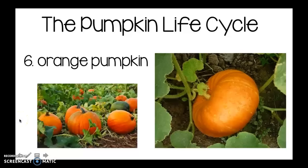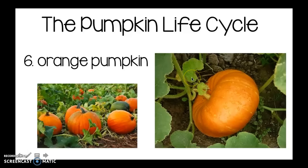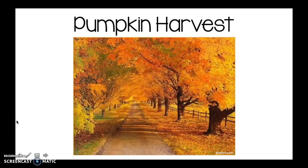The green pumpkin keeps growing and turns into an orange pumpkin. Look at this picture — the orange pumpkin is still connected to the vine; the farmer has not cut it off yet. In this picture, you can see the stem is cut off from the vine, so the farmer cut the pumpkin off the vine. Harvest means when a pumpkin is ready to be picked and go home with a family.